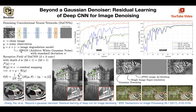But what if the noise is coming out of super resolution? That's going to give you a different type of noise. What if it's coming out of JPEG de-blocking? That's going to be a non-Gaussian type of noise. Can you go beyond a Gaussian denoiser? The answer is yes.